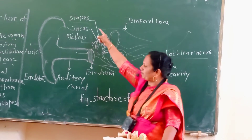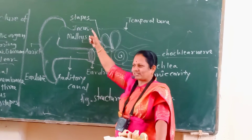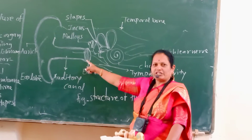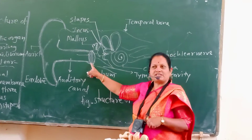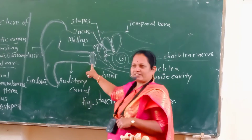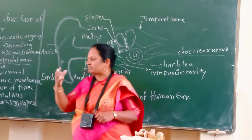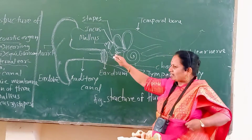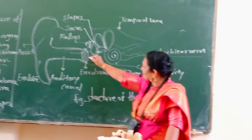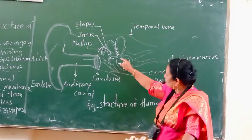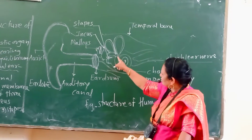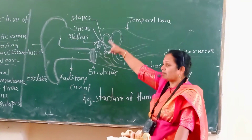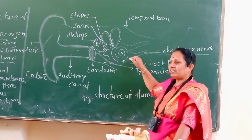It is the smallest bone present in the human body, located in the internal ear. The ear drum is richly supplied with nerves and blood vessels. When sound waves reach the ear drum, those sound waves are transported to the cochlea, semicircular canal, stapes, incus, and malleus — the middle ear parts.